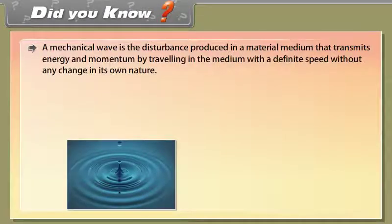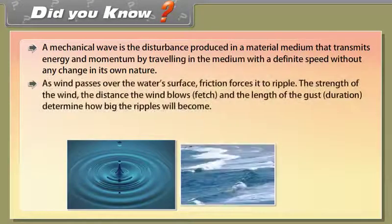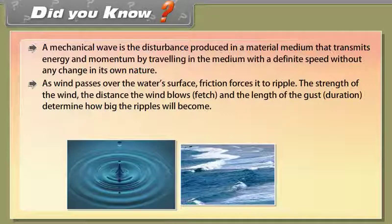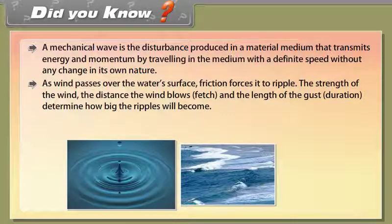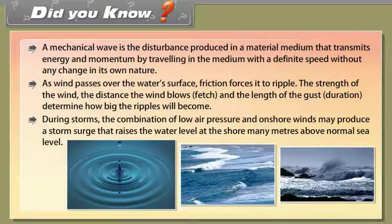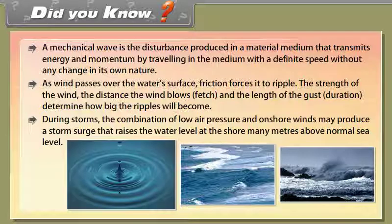Did you know? A mechanical wave is the disturbance produced in a material medium that transmits energy and momentum by traveling in the medium with a definite speed without any change in its own nature. As wind passes over water's surface, friction causes ripples. The strength of the wind, the distance the wind blows (fetch), and the duration of the gust determine how big the ripples become. During storms, the combination of low air pressure and onshore winds may produce a storm surge that raises the water level many meters above normal sea level.